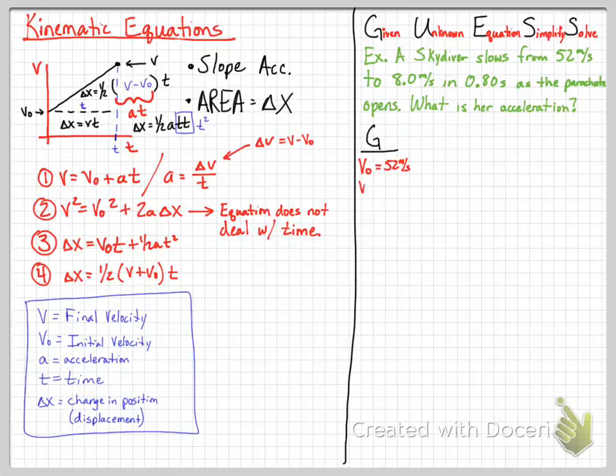So we write down all of our givens. What we're given is that the initial velocity was 52 meters per second. The final velocity was 8 meters per second. And time was 0.8 seconds. And then our unknown was acceleration.